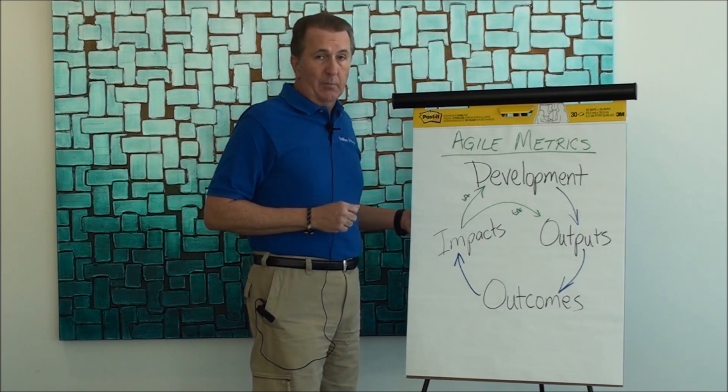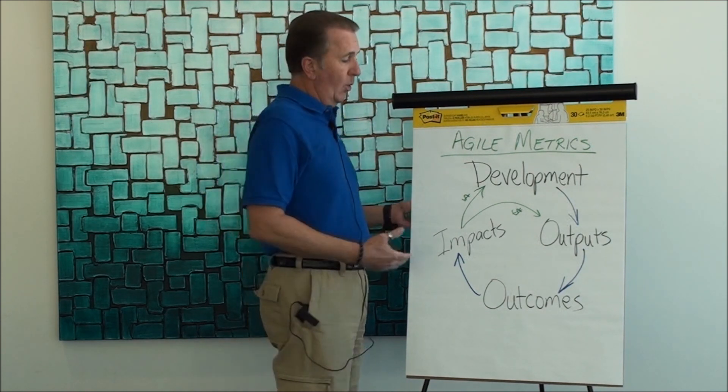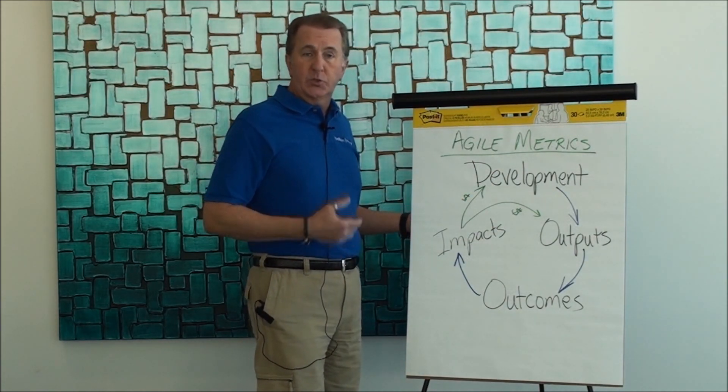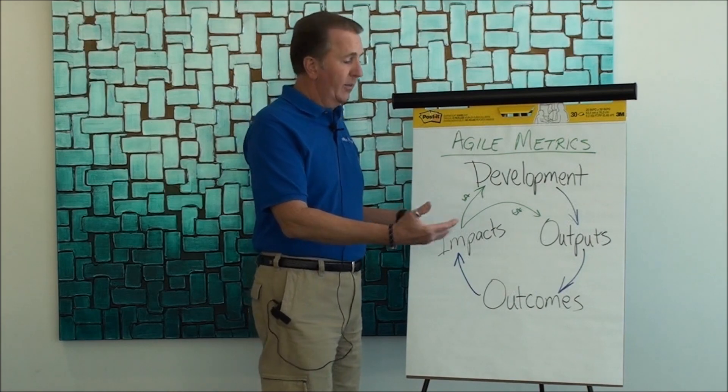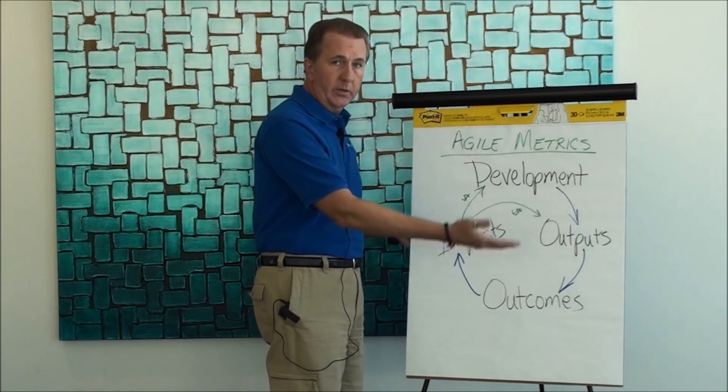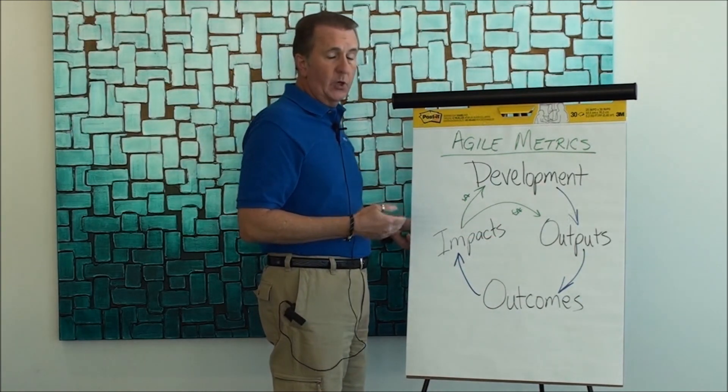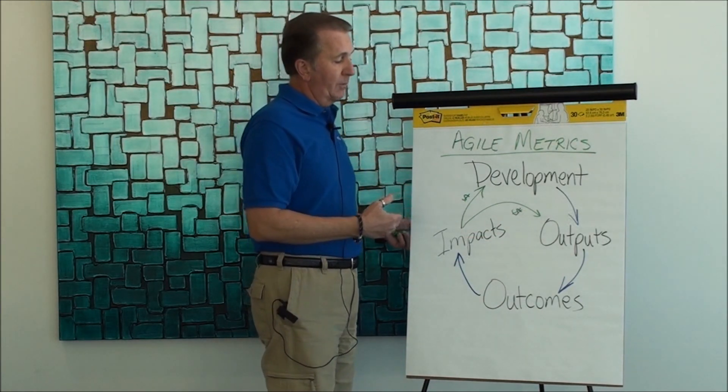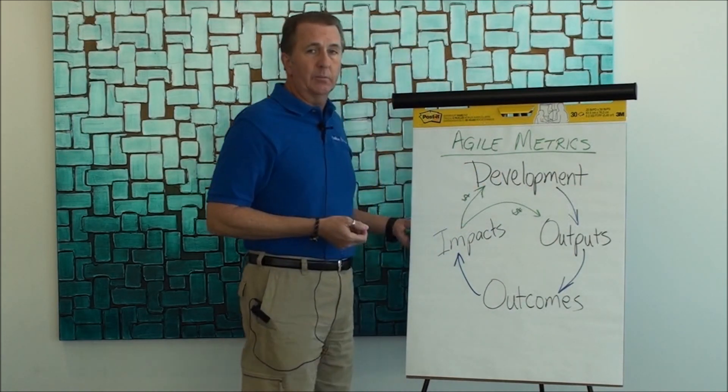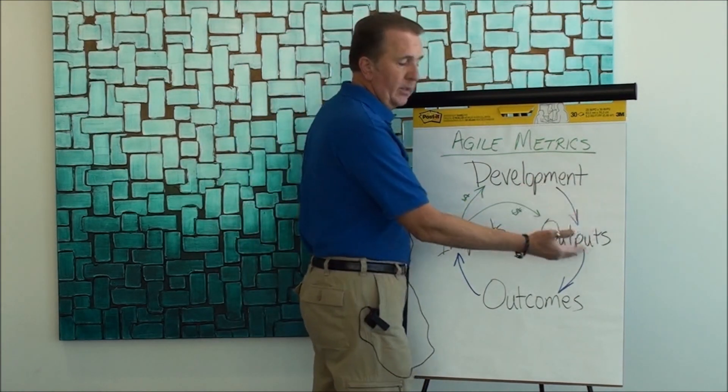Another metric that's common particularly in Scrum would be the team's velocity. Now the question is, what kind of metric is that? Well, if the team's definition of done includes deploying to production, then that's actually a measure of output because the team is actually deploying the software out into the marketplace. If the definition of done doesn't quite include that yet and stops short of deployment into production, then velocity is only measuring development, because we'll have to do more work before we can get from development into outputs.